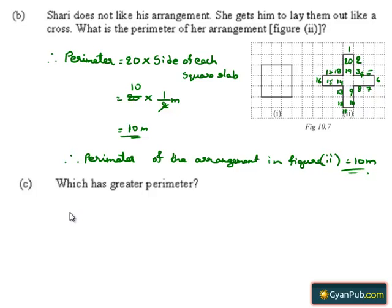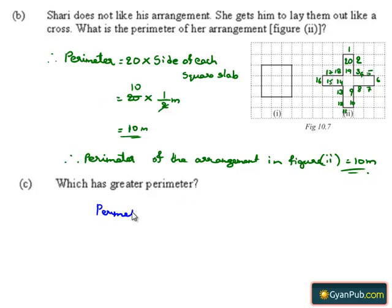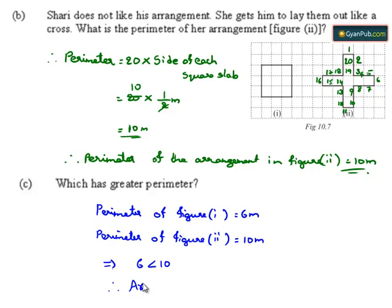Take part C. We are given to find which of figures 1 and 2 has the greater perimeter. In part A, we found the perimeter of figure 1 is 6 meters, and in part B we found the perimeter of figure 2 is 10 meters. Since 6 is less than 10, the perimeter of figure 1 is less than figure 2. Therefore, the arrangement shown in figure 2 has the greater perimeter.